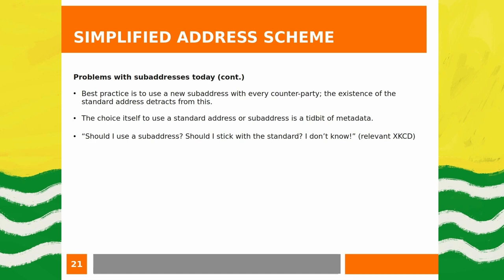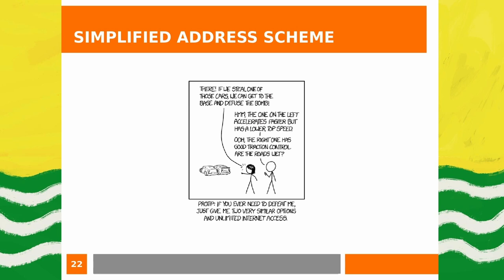There's also the general UX burden of: should I use a sub-address or the standard address? There's a relevant XKCD where someone is paralyzed choosing between two very similar options with unlimited internet access — the pro tip being, to defeat someone, just give them two very similar options. This choice of sub-address versus standard address is an extra cognitive burden thrust onto users that really shouldn't need to be there.